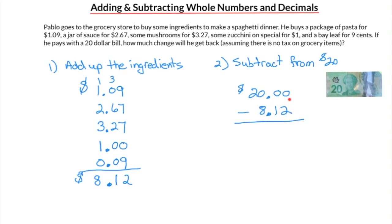We can start the subtraction, but the problem is we can't take two from zero, so we have to borrow from the next column over — in fact, we have to go all the way over to the tens column. We borrow one there, which makes the ones column turn into 10. Then we borrow one from that to make the tenths column become 10, and borrow one from that to make the hundredths column become 10. Now we can subtract: 10 minus 2 is 8; 9 minus 1 is 8; the decimal stays; 9 minus 8 is 1; and that 2 became a 1 when we borrowed, so 1 minus 0 is 1. Our change is $11.88.